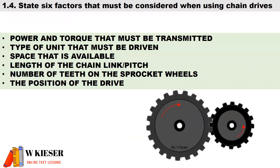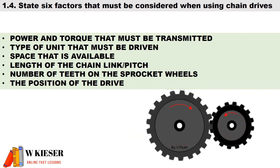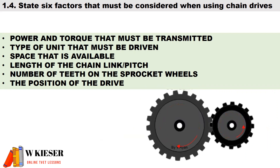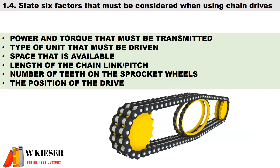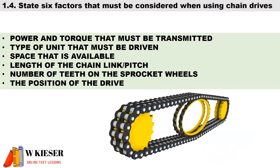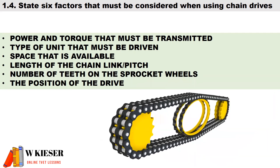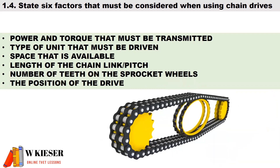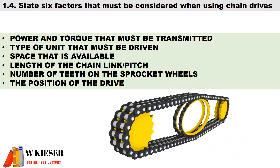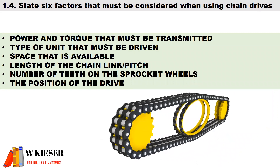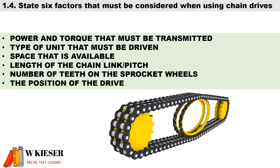In question 1.4, state six factors that must be considered when using chain drives. We should consider: the power and torque that must be transmitted, the type of unit that must be driven, the space that is available, the length of the chain, the number of teeth on the sprocket wheels, and the position of the drive.